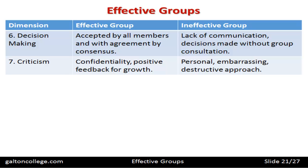When there's criticism, the effective group will promise confidentiality to someone who has a grievance, so nobody feels intimidated or embarrassed. There should be positive feedback for growth — once the criticism and issue have been dealt with, it should be fed back to the group so they can all learn from it and improve in the future. Criticism should be dealt with confidentially but fairly, with some outcome to guide the group so the same mistake is not made again.